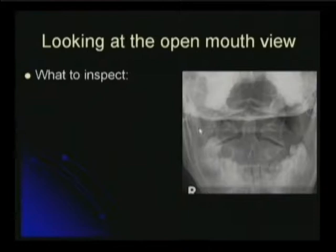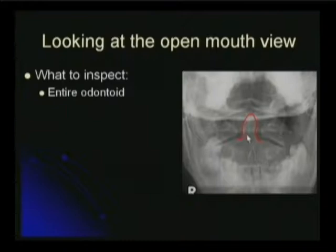What do you want to look at? You want to look at the odontoid process here. You should be able to see the whole thing. The most common place to have an odontoid fracture is across the base right here, and across just underneath it here. So you want to especially be able to see those areas. You'd also like to be able to see the tip of the odontoid.